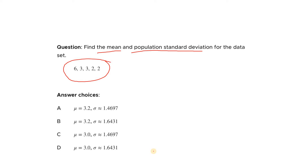Calculating the mean is very simple — just add all of these numbers and divide by how many there are: 1, 2, 3, 4, 5 — divide by 5. So 6 + 3 + 3 + 2 + 2, divided by 5, will give us the mean.